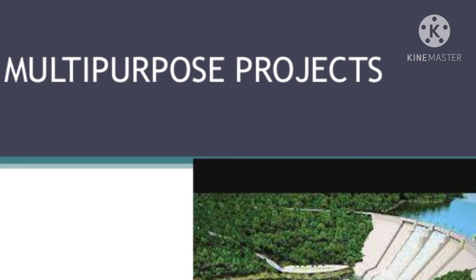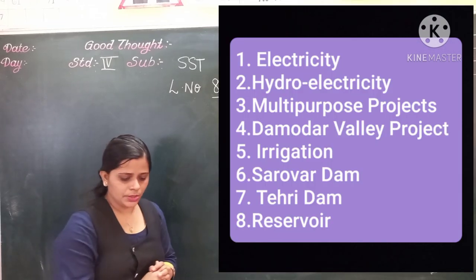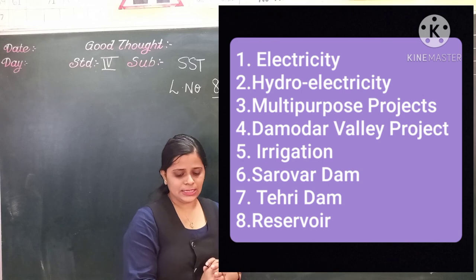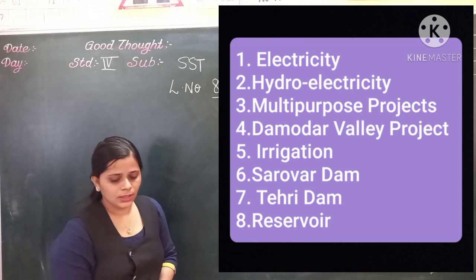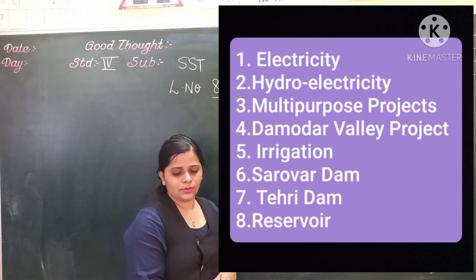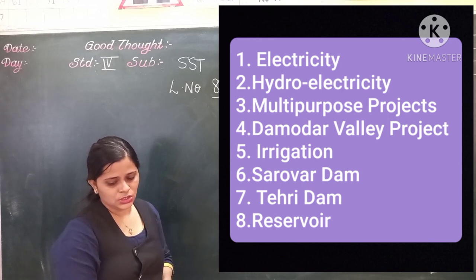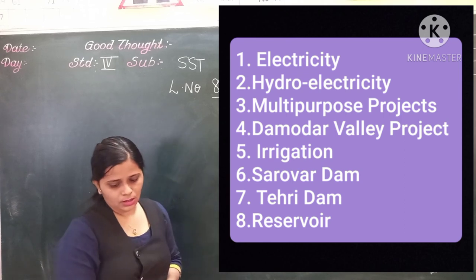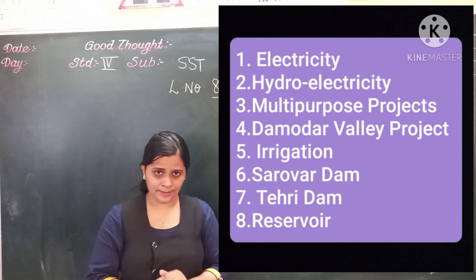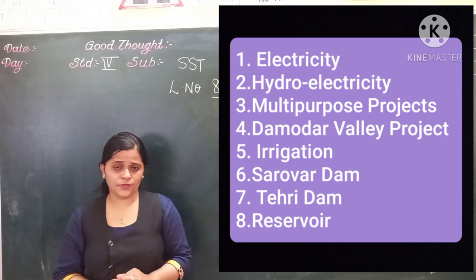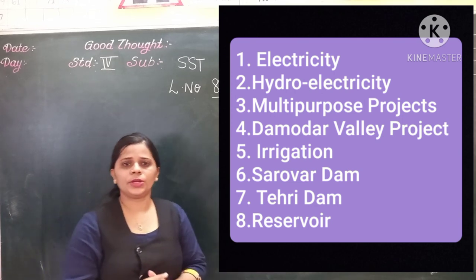Now students, take down your new words: first, electricity; second, hydroelectricity; third, multipurpose project; fourth, Damodar Valley Project; fifth, irrigation; sixth, Sarovar dam; seventh, Tehri dam; and eighth, reservoir. Copy these down in your notebook.